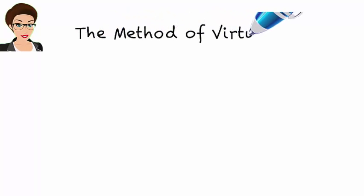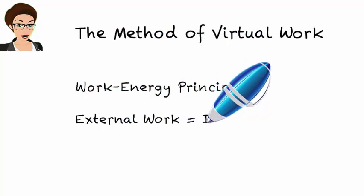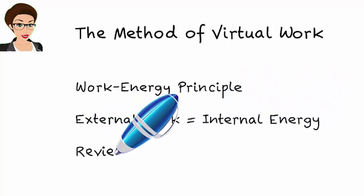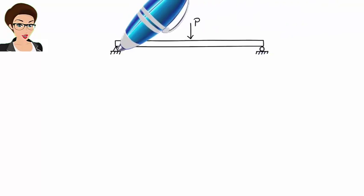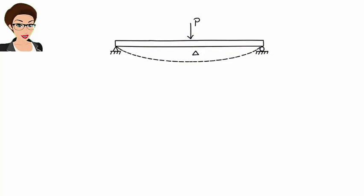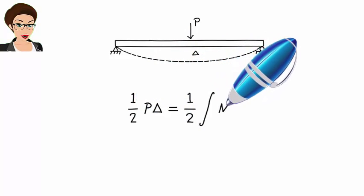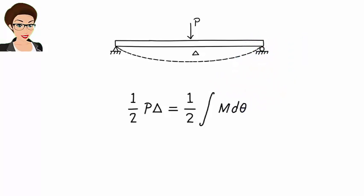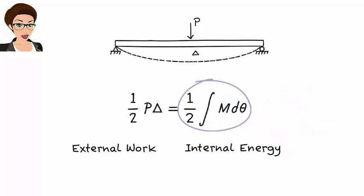The Method of Virtual Work. In previous lectures, the Work Energy Principle was used to relate external work to internal energy in a structure. For example, for a simply supported beam subjected to a concentrated load, the Work Energy Equation can be written as one half p times delta equals one half times the integral of m times d-theta. The left side represents external work done by the load, and the right side represents the internal energy stored in the beam.